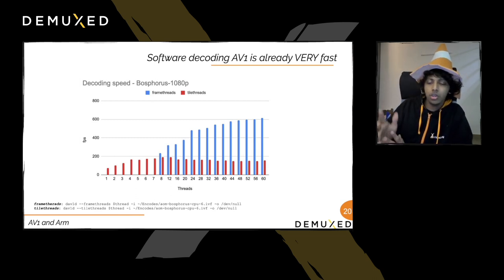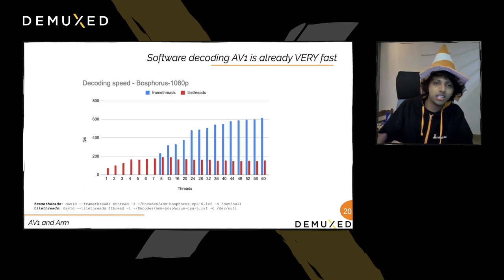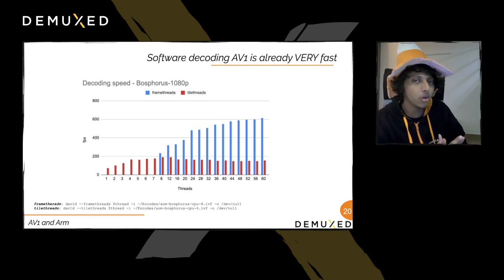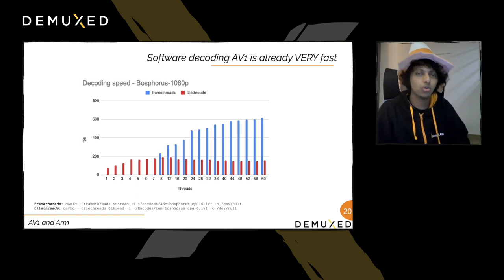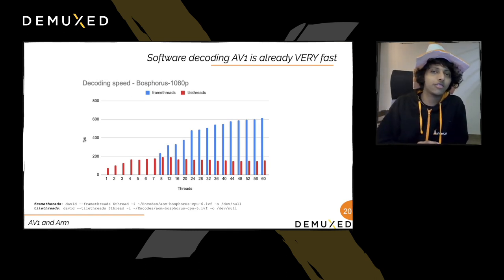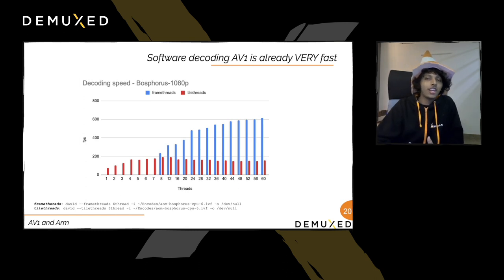Dav1d achieves speedups through two types of threading: frame threading, which assigns full frames to threads, and tile threading, which divides frames into slices decoded in parallel. With tile threading on a single thread, we easily achieve more than 30 FPS — sufficient for software decoding without hardware. With hardware and up to 60 cores, Dav1d can exceed 600 frames per second.